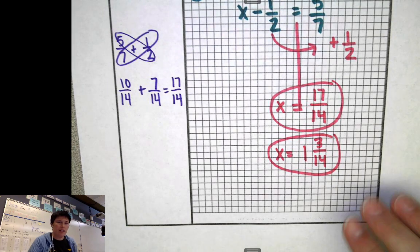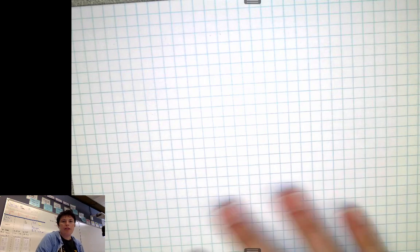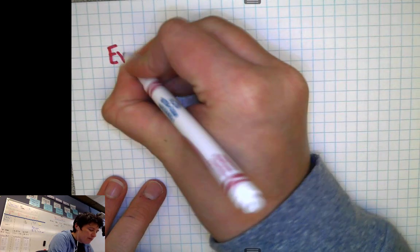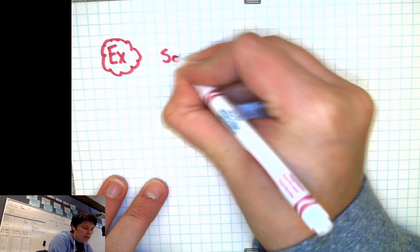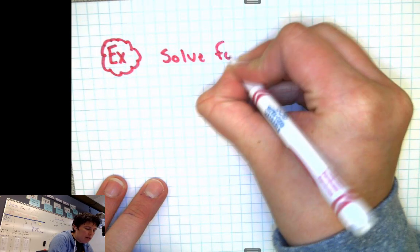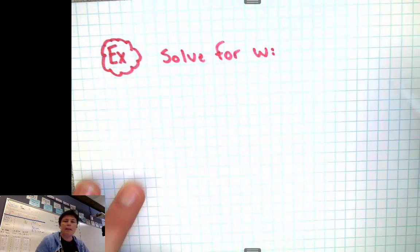Okay, so let's try some more of these, because there's different examples. So let's try another problem. Get some space here to work. For this one, let's solve for w. So a new example.